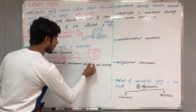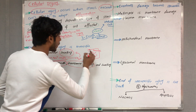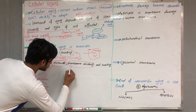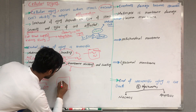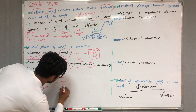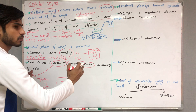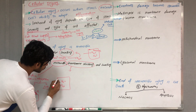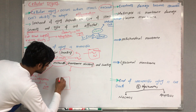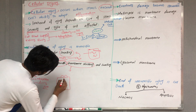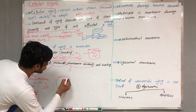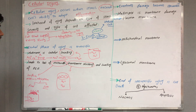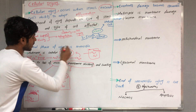Membrane blebbing also occurs due to swelling. When sodium enters followed by water, the cell swells and needs more space for water, so its membrane blebs outward to accommodate the increased volume.